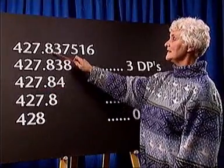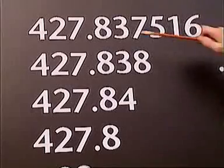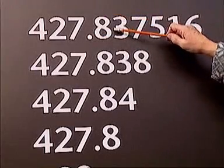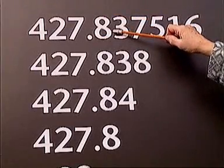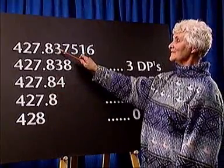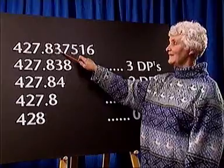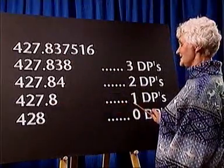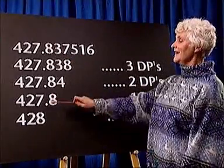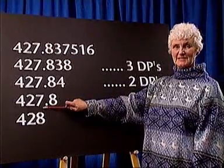If we approximate the same number to one decimal place, we count back one decimal place to the right. Eight remains because the first digit to be discarded is less than five. Our answer to one decimal place is 427.8.